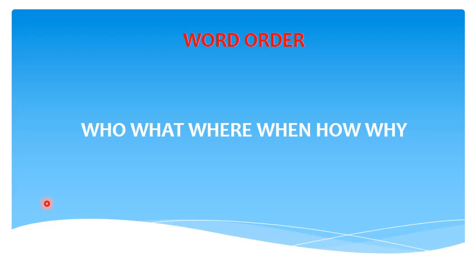Before we study the rules of syntax, let's examine the word order for a grammatically correct sentence. If we answer who, what, where, when, how, and why — wherein who refers to the subject, what refers to the action, where to a place, when to a time, how refers to the manner, and why to purpose — the sentence will be grammatically correct. How many of these you need to answer will depend on the sentence you are framing.